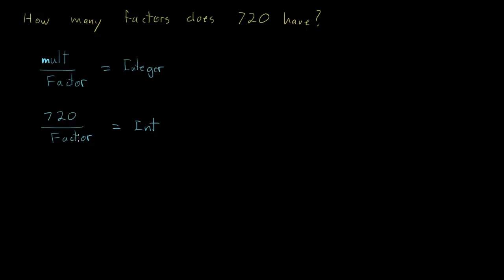Still, it's going to be hard to think of all the numbers that can divide evenly into 720, and there are going to be a lot of them. In order to make deductions, I want to rewrite 720 — and this is probably the major takeaway from this video. On factor and multiple questions, especially those involving large numbers, it becomes a lot easier to make deductions if we put those numbers in their prime factored form.